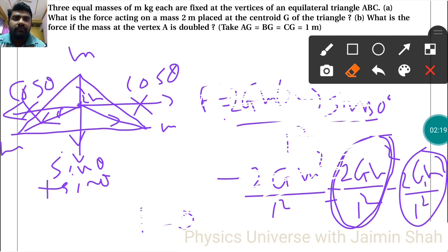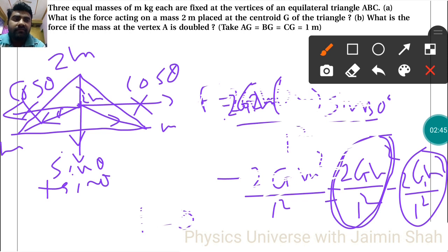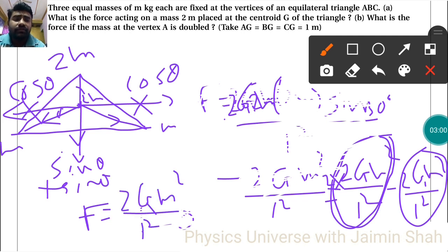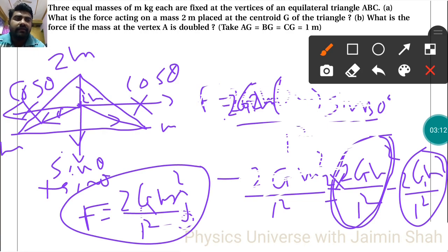In the second question, what is the force if the mass at vertex A is doubled to 2m? From the equation, the mass becomes 2m, so the term becomes 2G·2m, effectively multiplying by 2 again. The force is in the upward direction: 4 minus 2 gives 2, so the final answer is 2Gm²/l² in the upward direction — that is, in the positive j-hat (ĵ) direction.